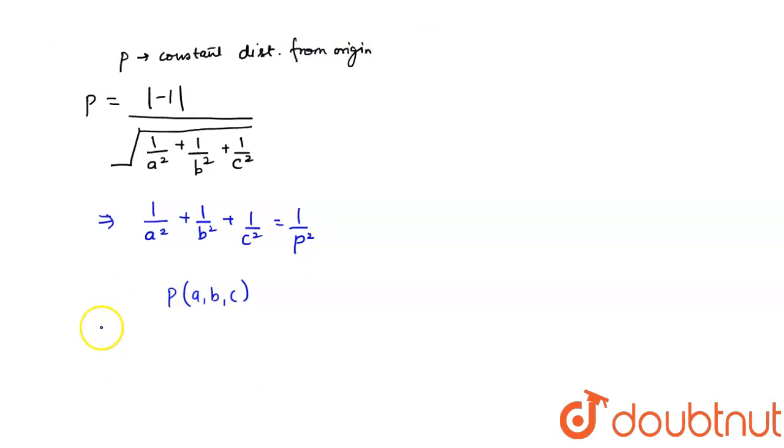So, what do I get? I get 1 upon x square plus 1 upon y square plus 1 upon z square is equal to 1 upon p square.